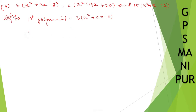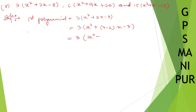Actually, I can split the middle term. So 3x² can be split using 4 and -2, since 4 times -2 gives -8 and 4 + (-2) gives 2. So we write: 3x² + 4x - 2x - 8.